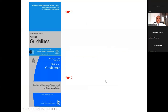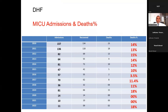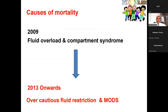We have seen several guidelines: 2010, 2012, and now 2023. With these guidelines, we have better understanding, reduced mortality, fewer ICU admissions, and fewer complications. Looking at ICU admissions and deaths from 2010 onwards: admissions have reduced from 157 in 2010 to 11 in 2022. Analyzing causes of mortality: in 2009, most deaths were due to fluid overload and compartment syndrome. From 2013 onwards, deaths are due to overcautious fluid restriction causing multi-organ dysfunction syndrome.